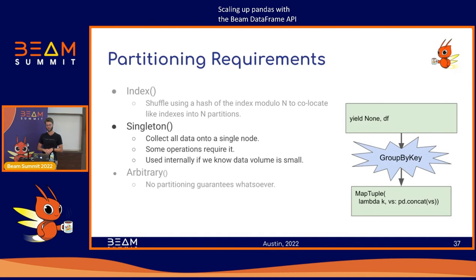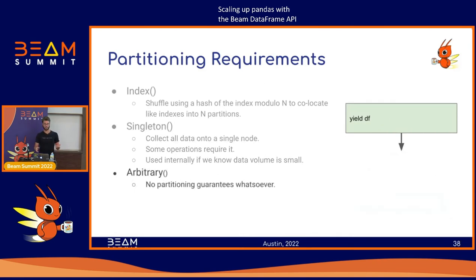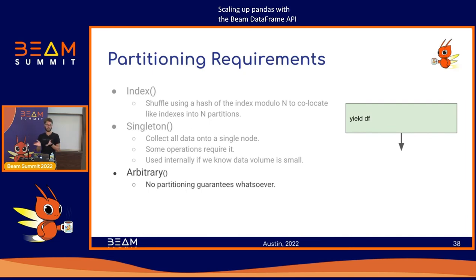The last form of partitioning is arbitrary partitioning, which indicates the expression doesn't need any special partitioning. This applies to things like multiplying by a constant or accessing a column from a DataFrame — operations where the data doesn't need to be co-located in any particular way. It could be distributed across many workers and we just do the same thing everywhere, so no special partitioning is required.